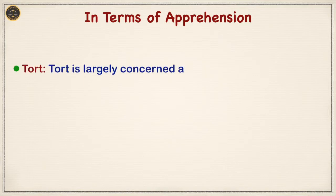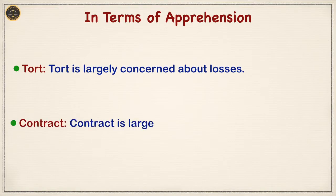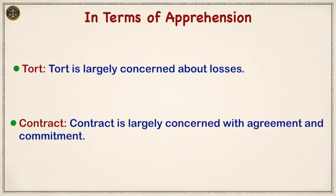Next, in terms of apprehension. Tort is largely concerned about losses. On the other hand, contract is largely concerned with agreement and commitment.